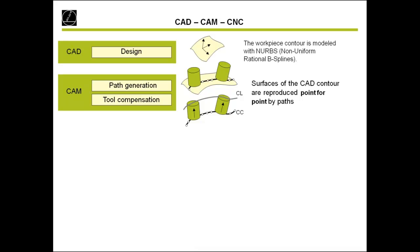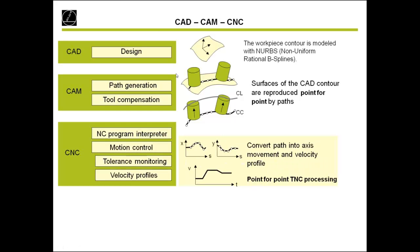The next step is the CAM system, which we need for path generation and also for compensating the tool. There we decide if we want to mill with an end miller or a ball nose cutter, and also the type of milling — for example, roughing or finishing. Then we come to the CNC, the Heidenhain topic, because we have not only the control — we have motors, measurement systems, and everything — and with all these together, we want to achieve the best surface on the milling machine.